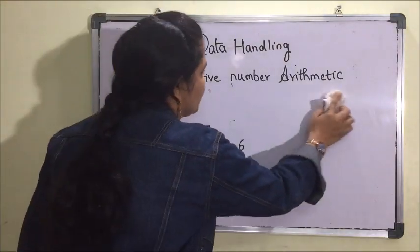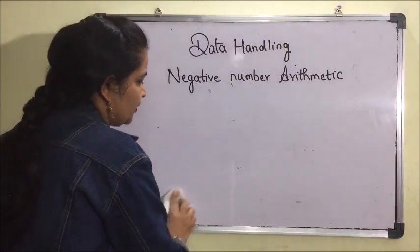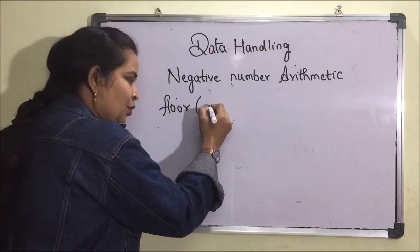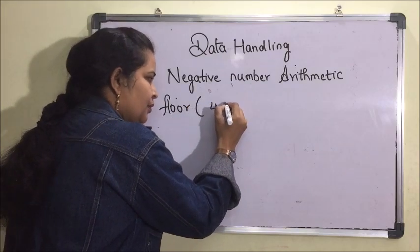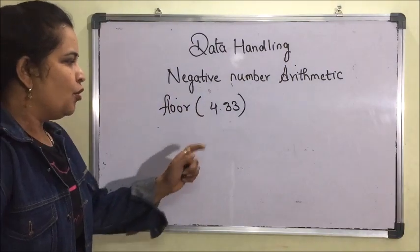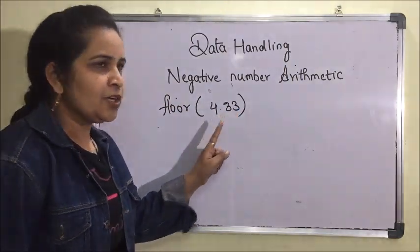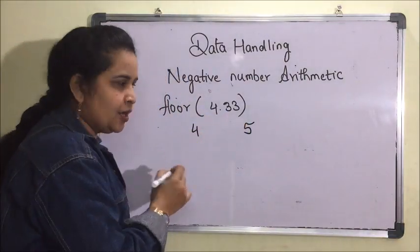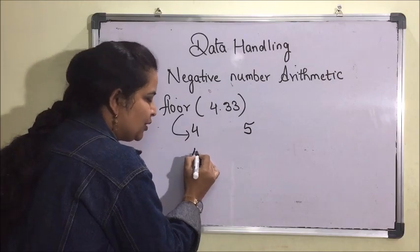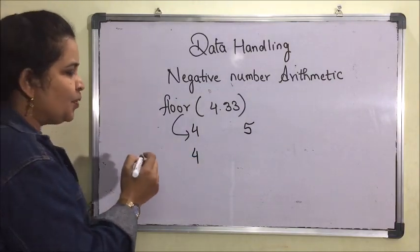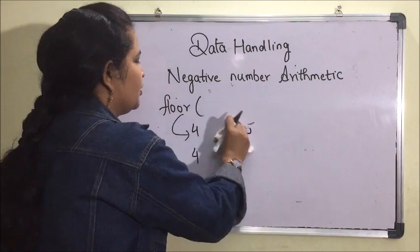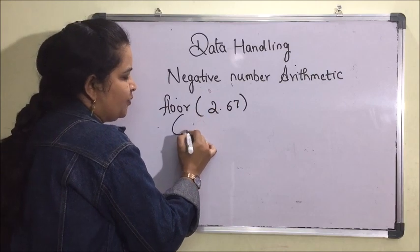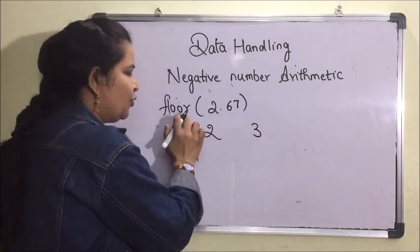The floor function — suppose I have written 4.33. This value lies between 4 and 5, so the floor function will return the lower value, which is 4. Suppose I have written floor of 2.67 — this value lies between 2 and 3, so the floor function will return 2.